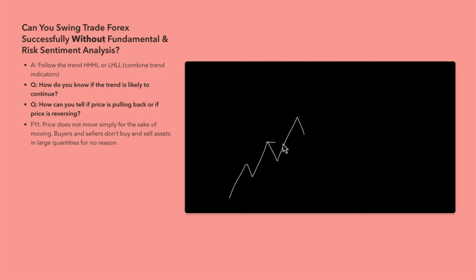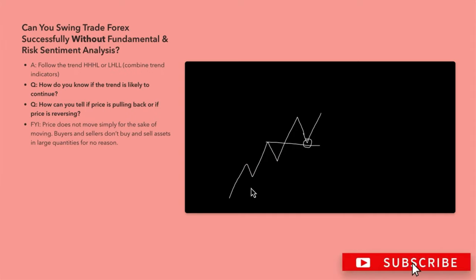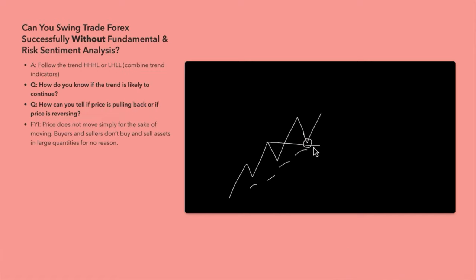You might see a higher high, higher low pattern occur, and combined with indicators like a moving average or an Elliott Wave a-b-c-d or 1-2-3-4-5 structure, that's pretty much all you need — so the thinking goes. But I'd ask: how do you know if the trend is likely to continue? Trends don't continue forever. With swing trading on a daily time frame, traders often see a trend after a 500–800 pip move and then want to jump in on the pullback.